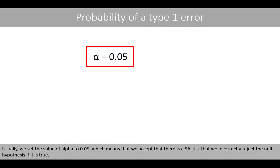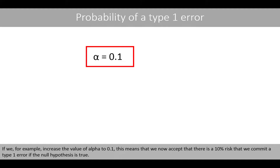Usually, we set the value of alpha to 0.05, which means that we accept that there is a 5% risk that we incorrectly reject the null hypothesis if it is true. If we increase the value of alpha to 0.1, this means that we now accept that there is a 10% risk that we commit a type 1 error if the null hypothesis is true.